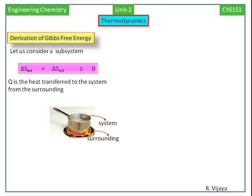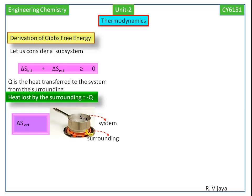If Q is the heat transferred to the system from the surrounding, then minus Q is the heat lost by the surrounding. So delta S external equals minus Q by T.